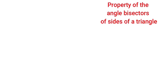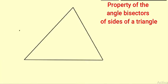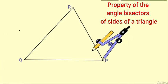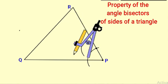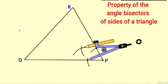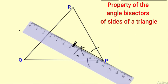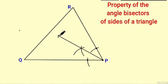Now let us extend the idea of angle bisector and perpendicular bisector to a triangle. Let us see how to draw all the angle bisectors of a triangle. Draw a triangle PQR and bisect angle P, angle Q, and angle R using the same process explained in this video.